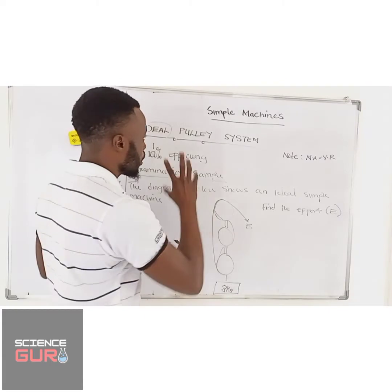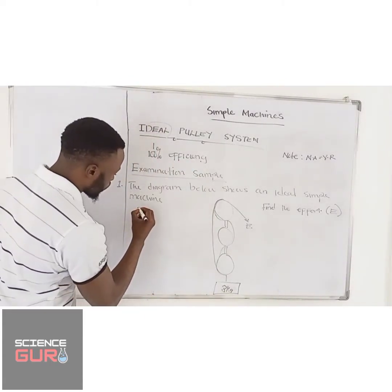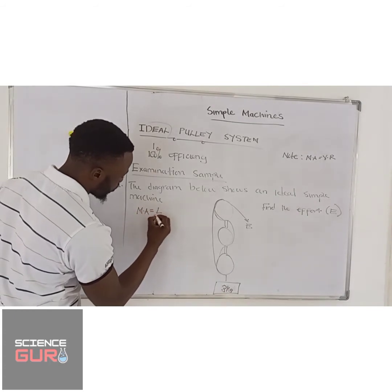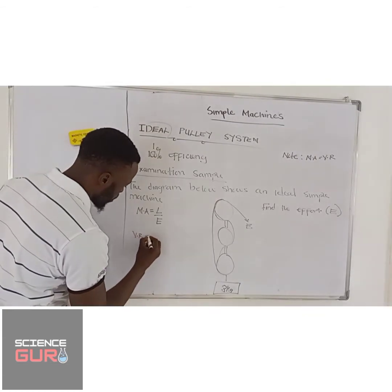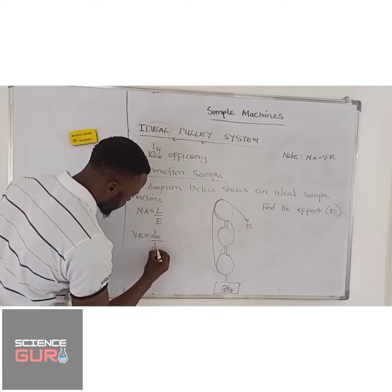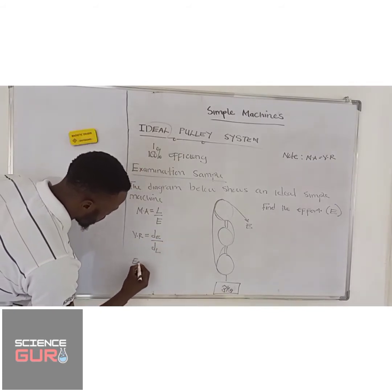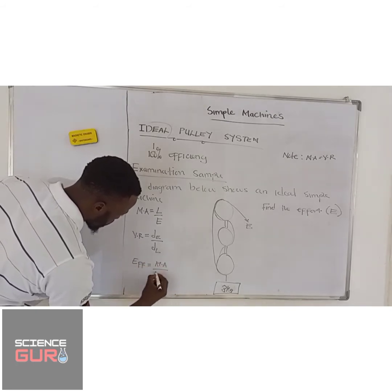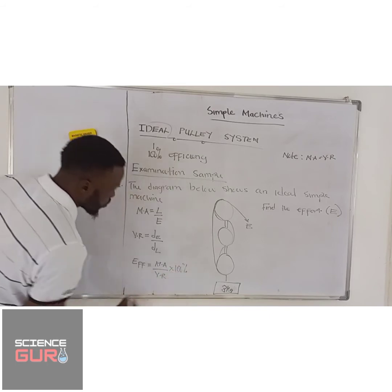When dealing with simple machines, there are formulas to take note of. Mechanical advantage is equal to load over effort. Velocity ratio is equal to distance moved by effort over distance moved by the load. Efficiency is given by mechanical advantage over VR times 100%.